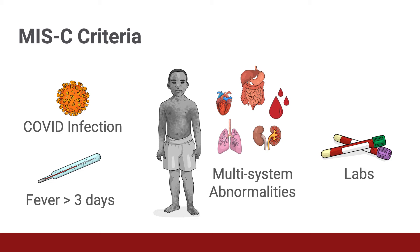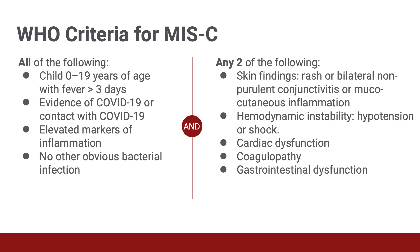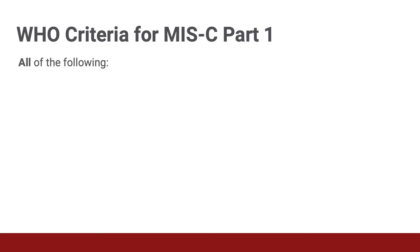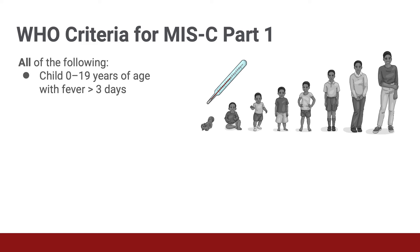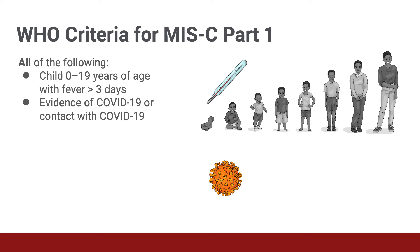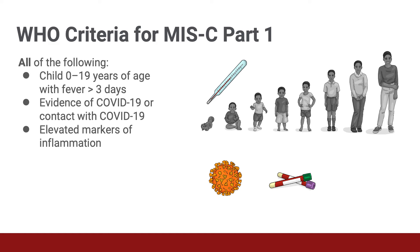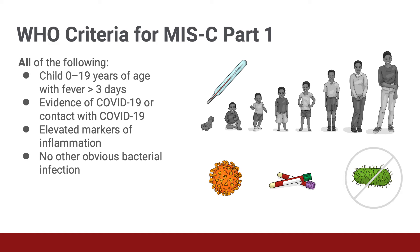To help make the diagnosis of MIS-C a little more streamlined, we will be using the WHO criteria listed here. For ease of explanation, we will divide this discussion into two sections. All criteria in part one must all be met in addition to two or more criteria from part two. The MIS-C criteria that need to all be present include age less than 19 years with fever greater than three days, evidence of current or past COVID infection diagnosed by antigen testing, serology, or PCR, or contact with a COVID-19 positive person, elevated markers of inflammation such as sed rate, CRP, or procalcitonin, and no other obvious microbial cause of infection including bacterial sepsis.